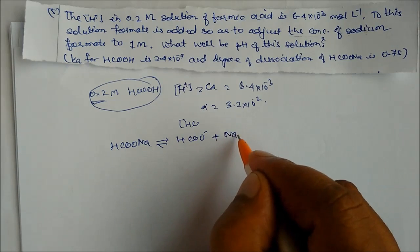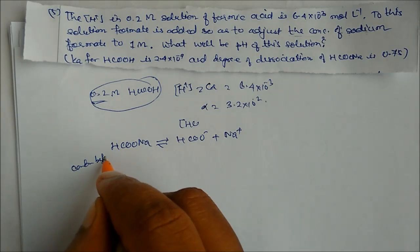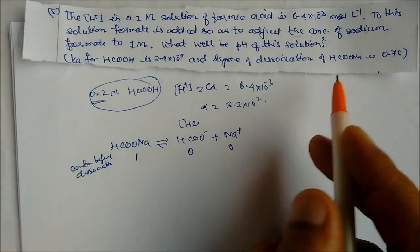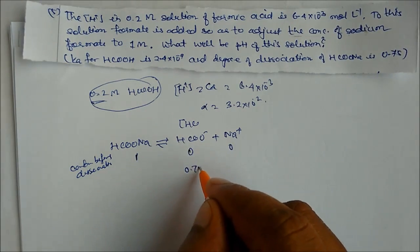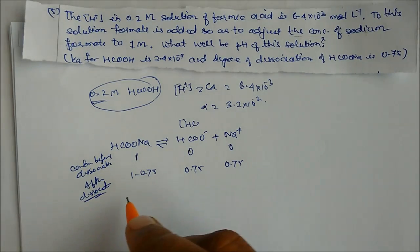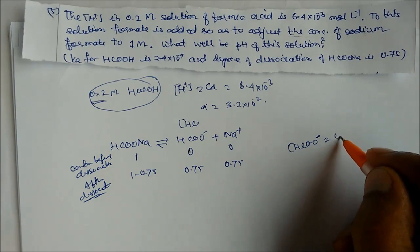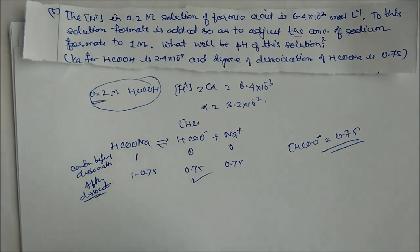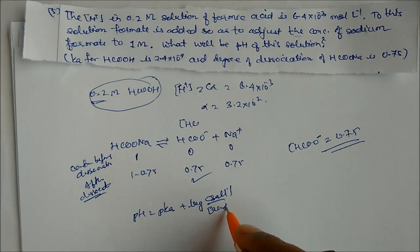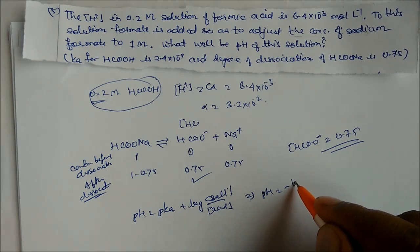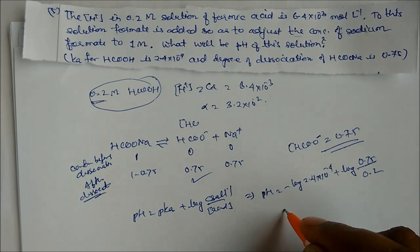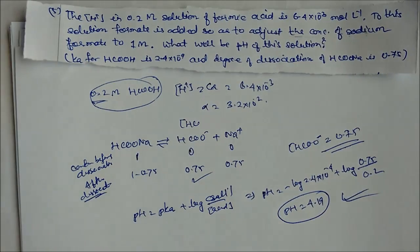Salt (sodium formate) dissociates to give formate ion. Initial concentration = 1 mol/L; after dissociation (degree 0.75), [formate] = 0.75 mol/L. Using the Henderson equation: pH = −log(2.4×10⁻⁴) + log(0.75/0.2). Solving gives pH = 4.19.